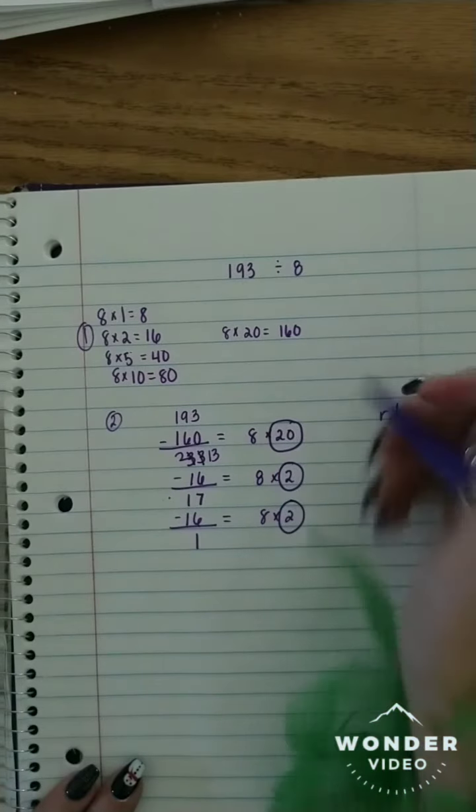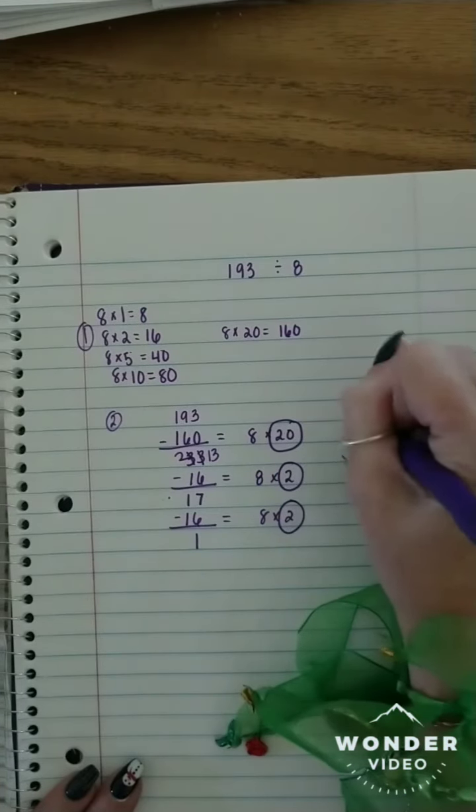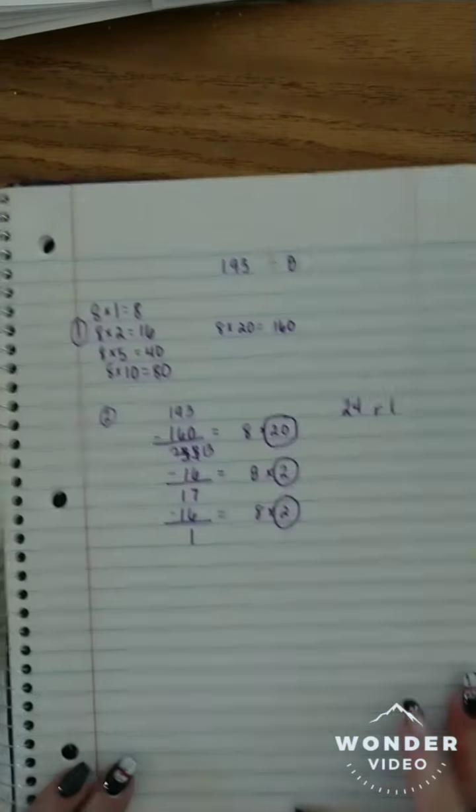20, 22, 24. So 193 divided by 8 is 24 remainder 1.